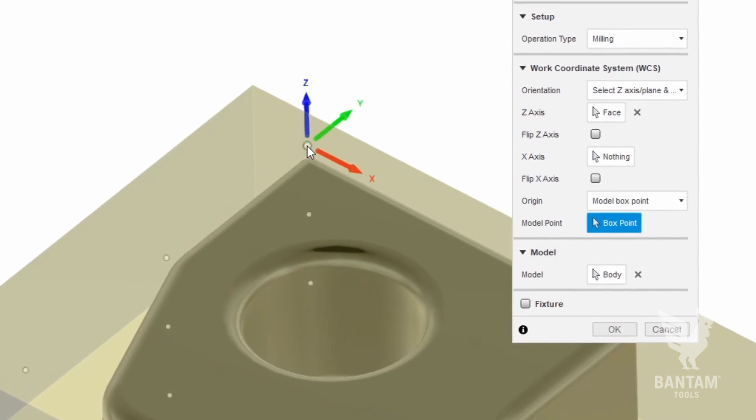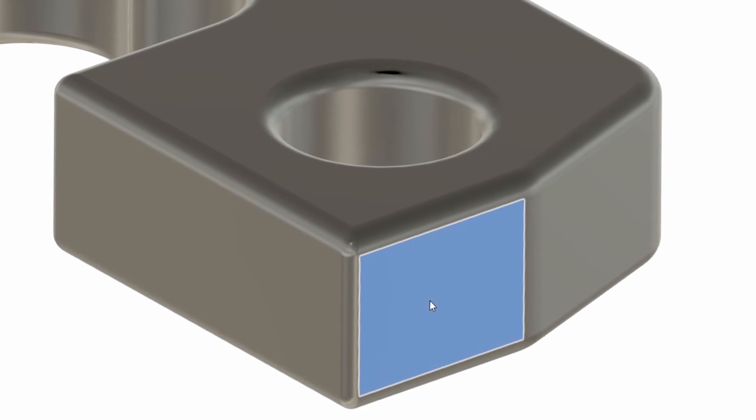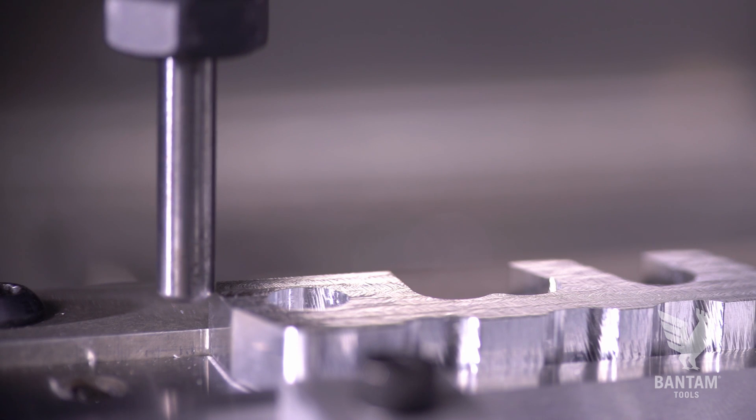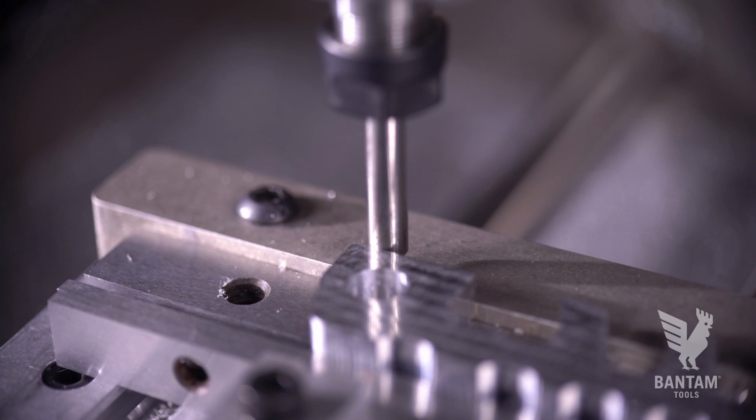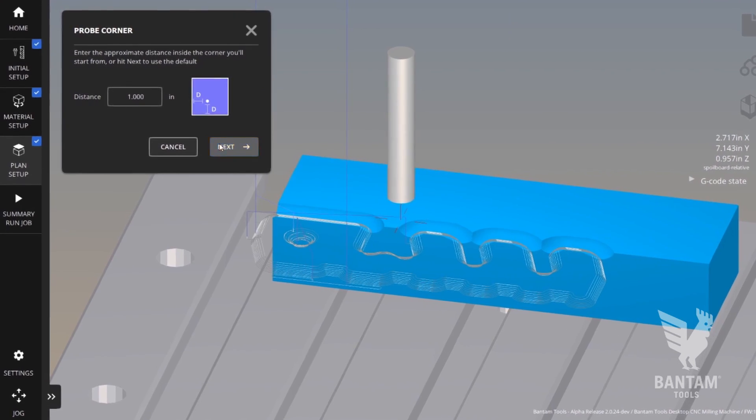This time, we set our work coordinate system in Fusion along the back left corner of the model because we have two flat surfaces that we can locate against. We can probe that location now using our single axis probing routine, or if you're a software subscriber using our outer rectangular routine.